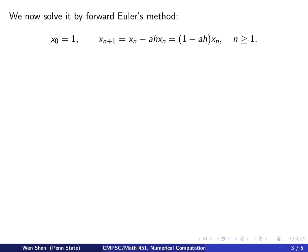We now solve it by forward Euler's method: x_0 = 1, x_(n+1) = x_n - ahx_n = (1 - ah)x_n, n ≥ 1. Simple induction shows that x_n = (1 - ah)^n x_0 = (1 - ah)^n.